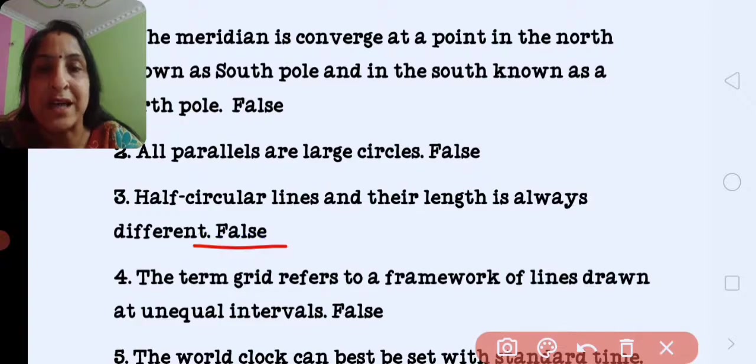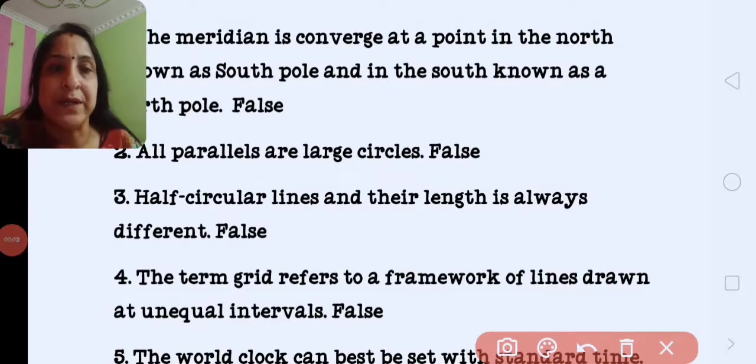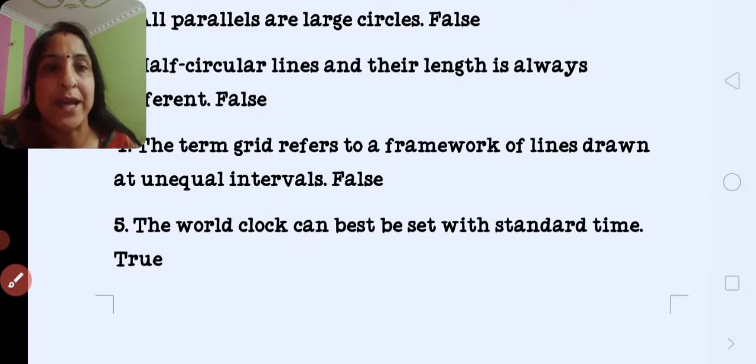The term grid referred to a framework of lines drawn at unequal intervals. This statement is also false, because there is an equal distance between the longitudes and the parallels of latitude that is 1 degree. Next is the world clock can best be set with the standard time. Answer is true.